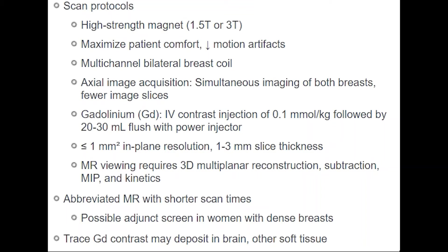Now let's have a quick review of scanning protocols for breast MRI. There should be high magnet strength — 1.5 tesla or 3 tesla. Patient motion should be minimal, so maximize patient comfort. Multi-channel bilateral breast coils should be used and simultaneous imaging of both breasts should be done. If using gadolinium contrast, IV contrast injection of 0.1 mmol per kg followed by 20 to 30 ml flush with a power injector is recommended.